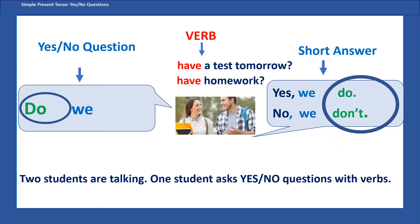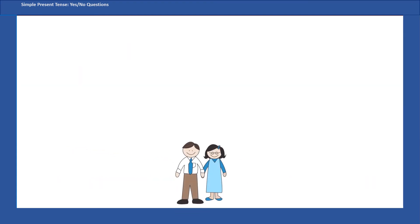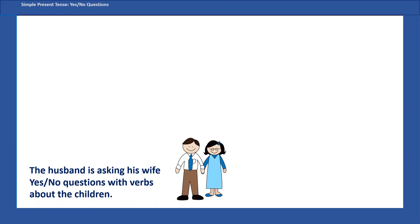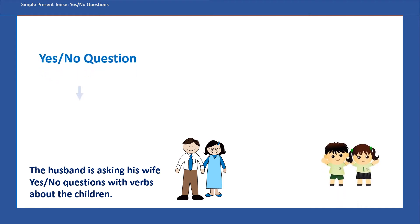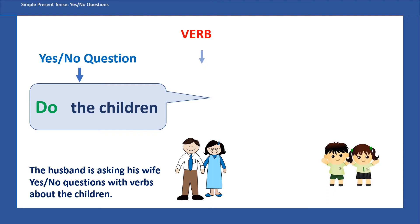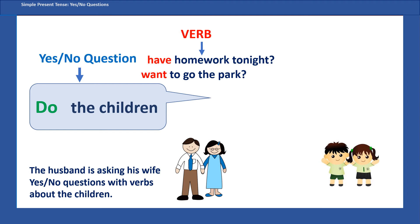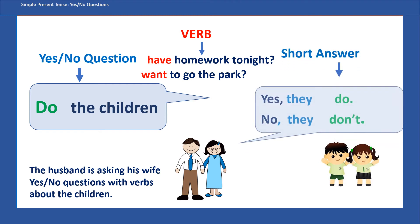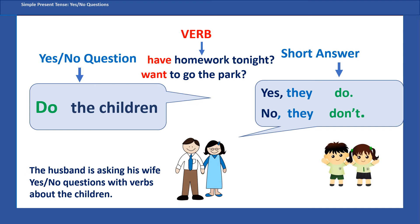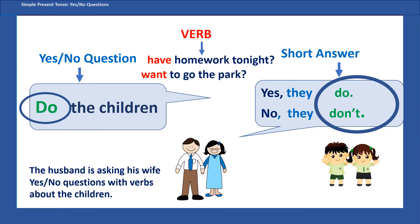The helping verb 'do' or 'don't' also appears in the answer. The husband is asking his wife yes/no questions with a verb about the children. Do the children have homework tonight? Do the children want to go to the park? The wife says 'Yes, they do' or 'No, they don't.' The helping verb appears in both the yes/no question and the short answer.